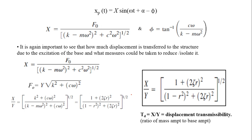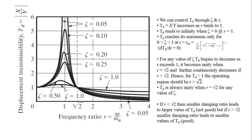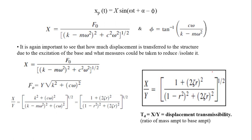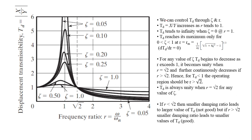The next step is to plot these ratios — the value of x/y — in terms of different values of r and zeta. We have done this before in the previous lecture where we plotted the magnification factor on the y-axis and the frequency ratio on the x-axis. Similarly, we are now going to plot this displacement transmissibility expression in terms of zeta and r to extract some important observations.